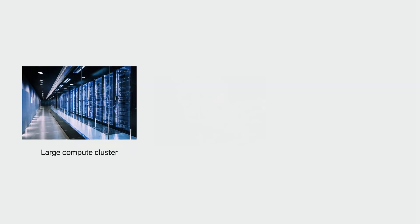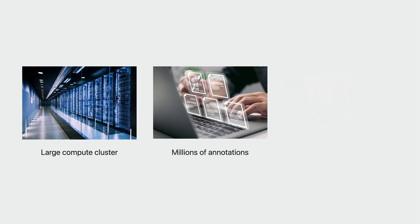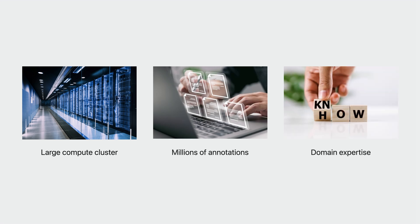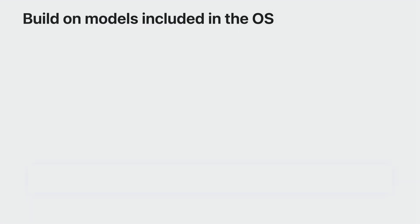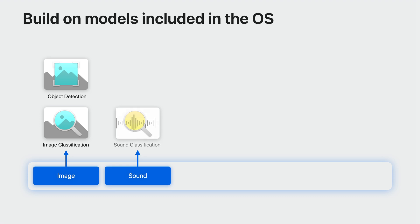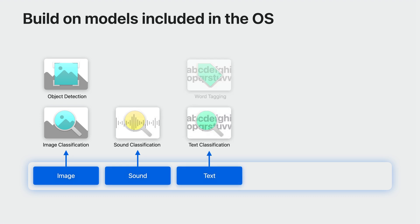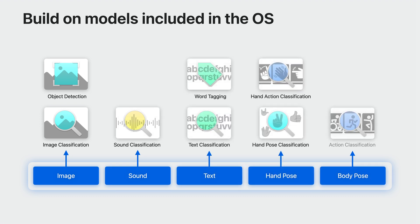Training a large-scale model from scratch can take thousands of hours, millions of annotated files, and expert domain knowledge. Our goal is to give you the tools to build great apps that use machine learning without all of the overhead. We've gone through the process of creating state-of-the-art models that power many features, like the search experience in the Photos app and custom sound recognition and accessibility. CreateML gives you access to our latest technology, so you can build your own custom machine learning experiences without the hassle.